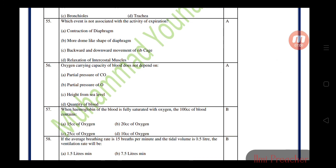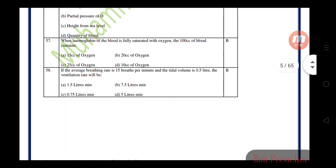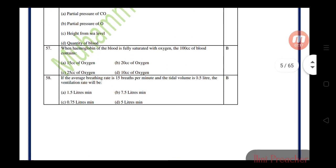Oxygen carrying capacity of blood doesn't depend on partial pressure of carbon monoxide. When hemoglobin is fully saturated with oxygen, 100 cc of blood contains 220 cc of oxygen. If average breathing rate is 15 breaths per minute and tidal volume is 0.5 liters, the ventilation rate will be 7.5 liters per minute. That's all. I hope this is clear. See you in the next video.